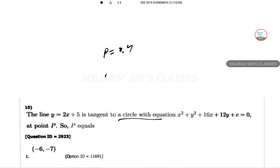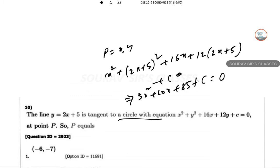This should be x square. So 2x plus 5 whole square, 2x plus 5 whole square plus 16x plus 12 into 2x plus 5 plus C. So this is 5x square plus 60x plus 85 plus C equal to 0. So because the line and the circle are tangent at this point x, y, there should be only one single solution to this, so one solution.